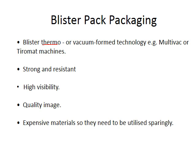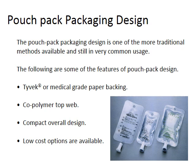Blister packs are usually made using thermal or vacuum-formed technology — using heat or a vacuum to mold the hard plastic top. There are different types of machinery, such as Multivac or Uhlmann machines, that produce these blister packs. They're very strong and resistant, you get high visibility of the product and a quality image. The materials are expensive so they need to be utilized sparingly.